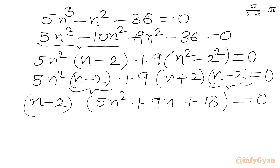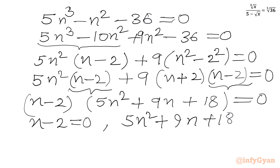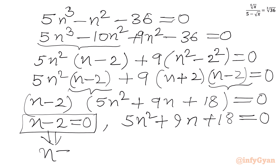Using the zero product rule, either n minus 2 equal to 0, or 5n² plus 9n plus 18 equal to 0. Solving the first equation gives n equal to 2, our first real solution.